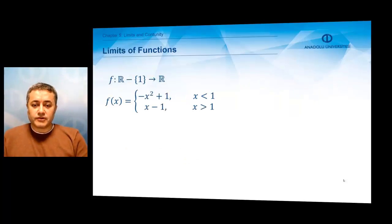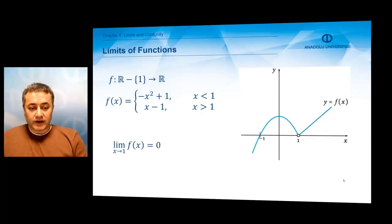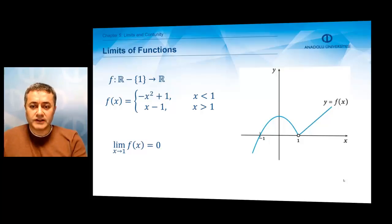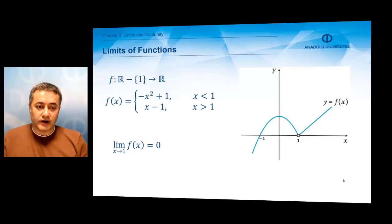Let's proceed with another example. This time, let us take this piecewise defined function, which is minus x squared plus 1 if x is less than 1, and x minus 1 if x is greater than 1. As we approach 1 from the left or right, we see that the values of the function approach 0. But interestingly, the function has no value at this point — the function is not defined at x equals 1, as given by the domain of definition. So we can still have a limiting value for a function which does not have a value, meaning the behavior of the function is known but the value of the function is not given at all.